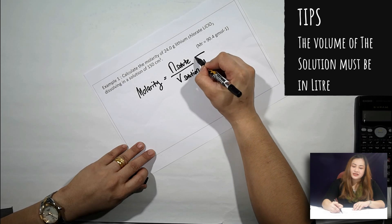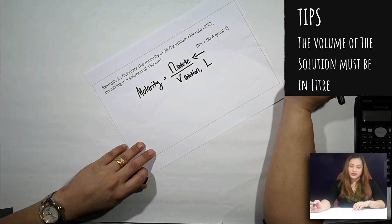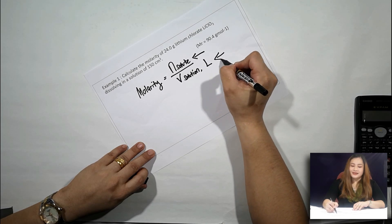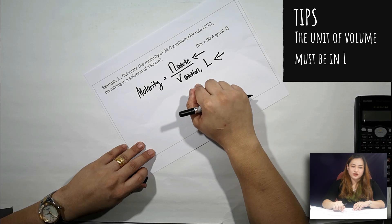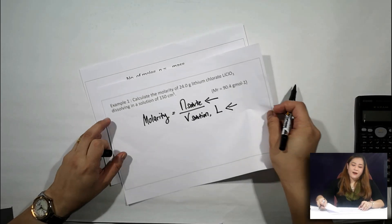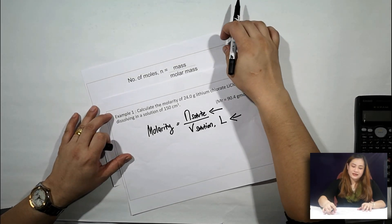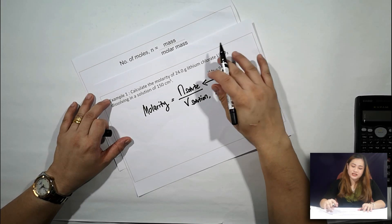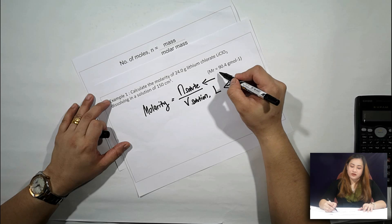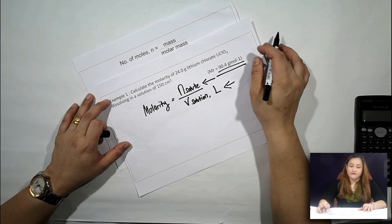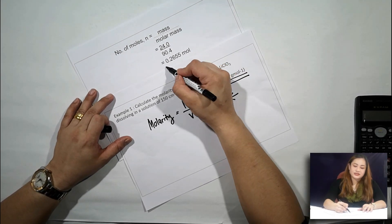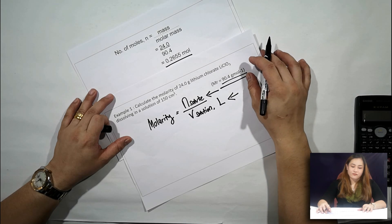First, you need to find the number of moles of solute and convert the solution into liters. How you find number of moles of solute is by using the formula mass over molar mass. The mass given for lithium chloride is 24 grams. While the molar mass for lithium chloride is 90.4 grams per mole. So you calculate the number of moles which is 0.2655 moles.